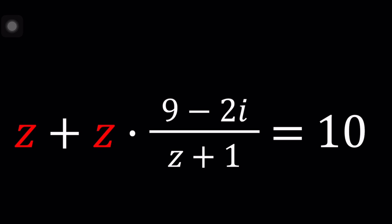We have z plus z multiplied by 9 minus 2i divided by z plus 1 equals 10, and we're going to be solving for z values. I said values but that doesn't mean there's more than one. Are there any solutions? Let's find out.